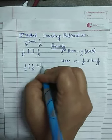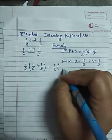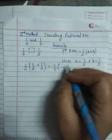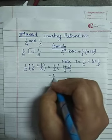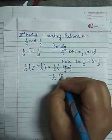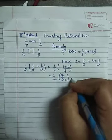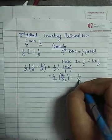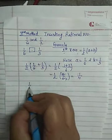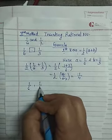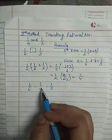So the first rational number = half of (1/6 + 1/3). The LCM of 6 and 3 is 6, so the numerator becomes 1 + 2 = 3, giving 3/6. That gives us 1/2 × 3/6, which we can simplify to get 1/4. So 1/4 is the rational number just in between 1/6 and 1/3.